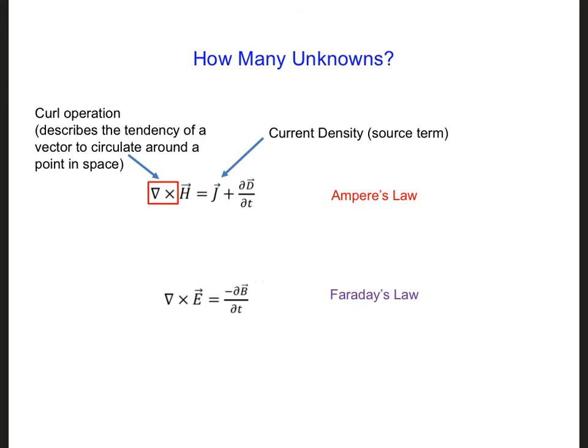So, returning to Maxwell's equations, on the right sides of these equations, if we can relate D to E using D equals ε E, and B to H using B equals μ H, it turns out that there are just two equations and two unknowns.